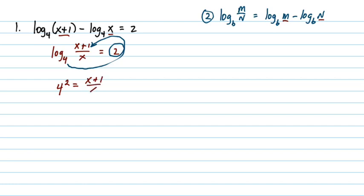It'll be 4 squared is equal to x plus 1 over x. I'm sloppy here. x plus 1 over x. Alright, so of course that's going to be 16 is equal to x plus 1 over x. And we're going to want to clear fractions here. So I need to multiply both sides by x. So I'm going to multiply by x on each side. And notice these guys are going to cancel.